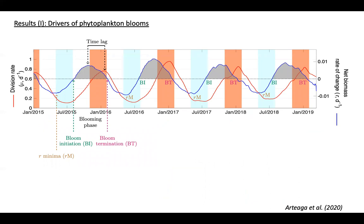This is the main scientific takeaway of that study. I'm showing you the seasonal temporal dynamics of phytoplankton blooms. The left y-axis gives the phytoplankton division rate in red; the right y-axis gives the scale for the net rate of change of biomass — the accumulation rate in blue. Whenever the blue line is positive we have net biomass accumulation, and whenever negative we have net biomass decline. The blooming phase is highlighted in gray. The main takeaway is the same temporal lag between the peak in biomass accumulation and the peak in division rate — about three months — consistent with the satellite record.